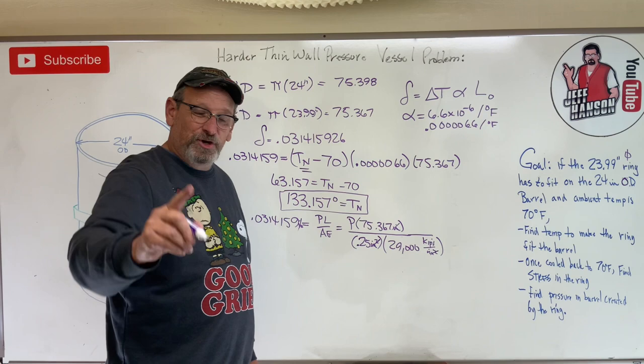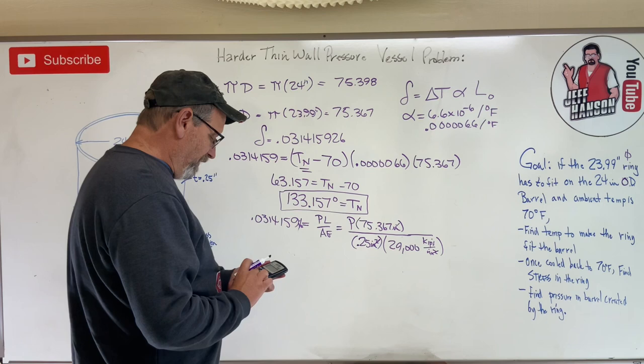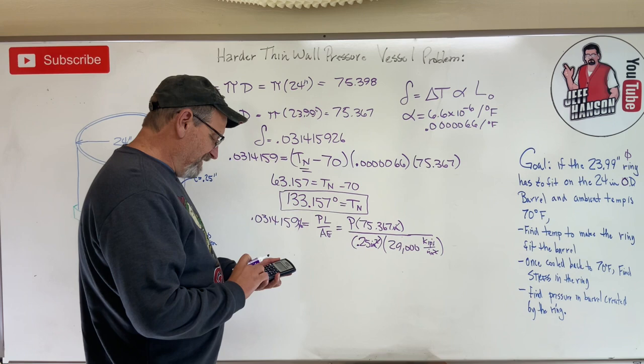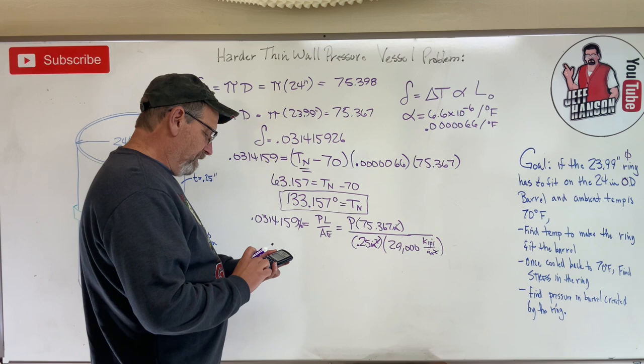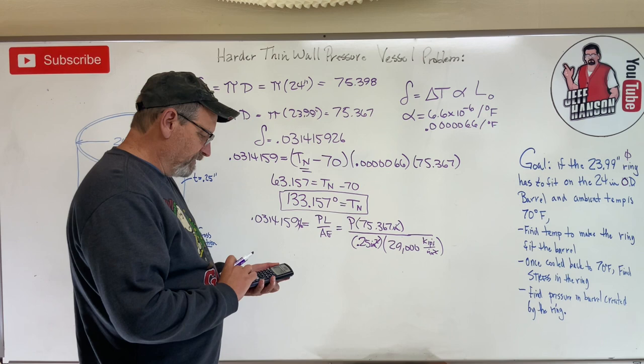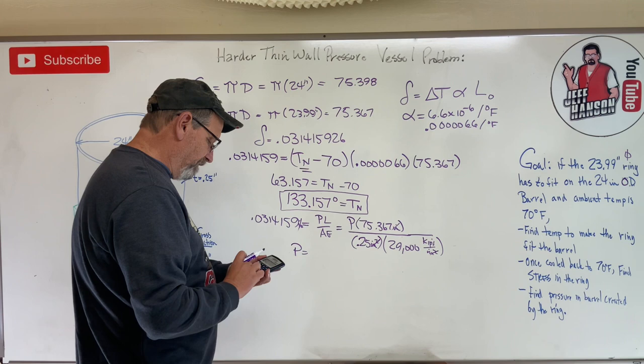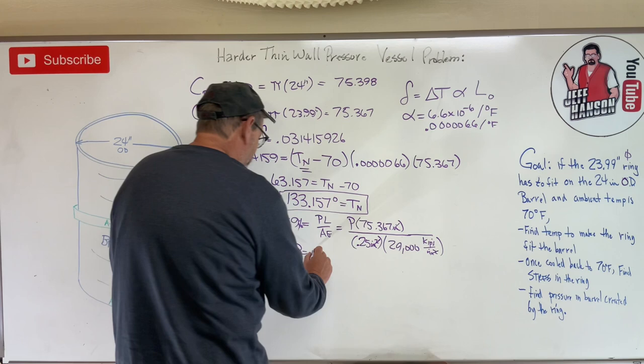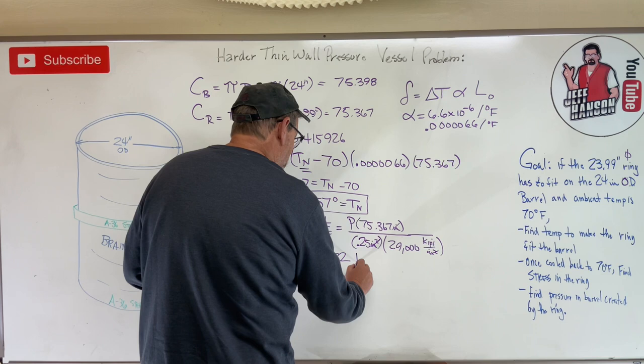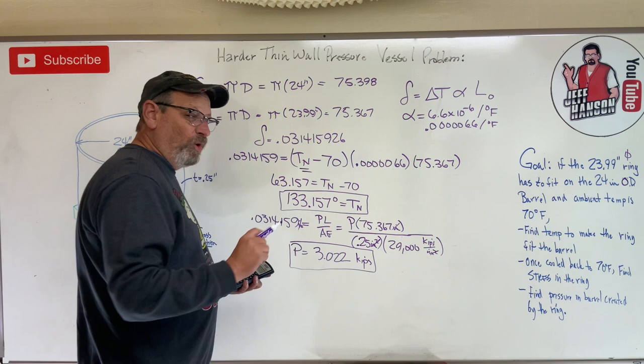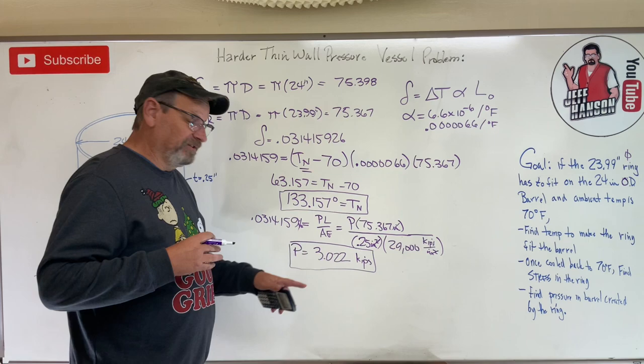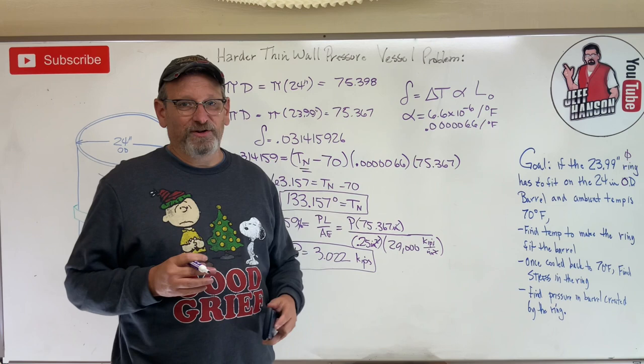Inches squared cancel out, inches cancel out, and when I find P it's going to be in kips. That's important to do a unit analysis to make sure you know what your answer's in. So let's calculate: 75.367 divided by 0.25 divided by 29,000 - I'm going to take that number and divide it into this. So P equals 0.031415926 divided by answer: 3.022 kips. That's the force in the rod. That's kips - a thousand pounds - that's three thousand pounds of stretching force there.